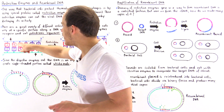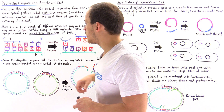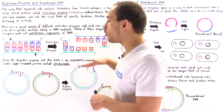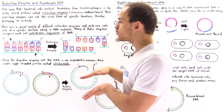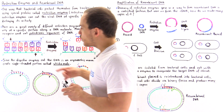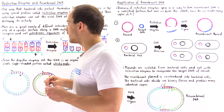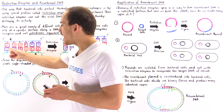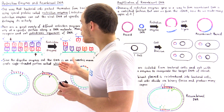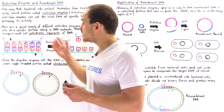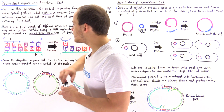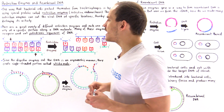We also have base pairing between the two single strands, and that's what holds the two strands together. We have adenine shown in red, thymine shown in dark purple, guanine shown in orange, and cytosine shown in light purple.